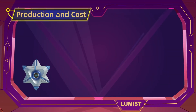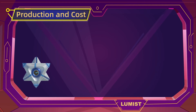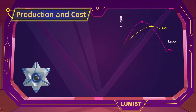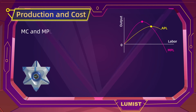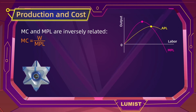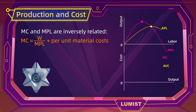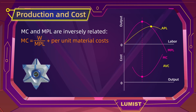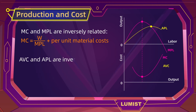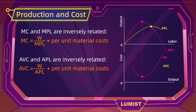Now let's figure out what our cost curves look like. We first graph out our product curves and then derive the cost curves from there. Marginal cost is inversely related to marginal product of labor, because it's simply the labor wage divided by marginal product plus other per unit material costs. In the same way, average variable cost and average product of labor are inversely related — labor wage divided by the average product of labor plus other per unit material costs gives us average variable costs.